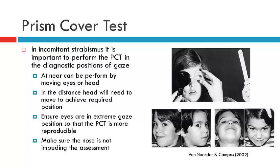In order to do this we'll obviously have to move the eyes into the position that we're interested in measuring, and we can do this in one of two ways. We can either move the patient's eyes into the position of gaze, or we can move the patient's head and ask the patient to look into primary position, which will ensure that the patient is looking into a specific position of gaze.